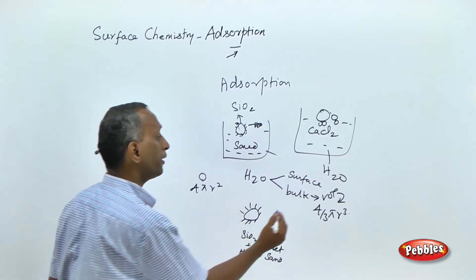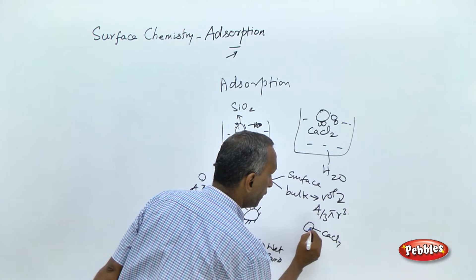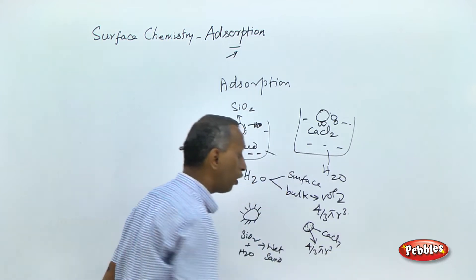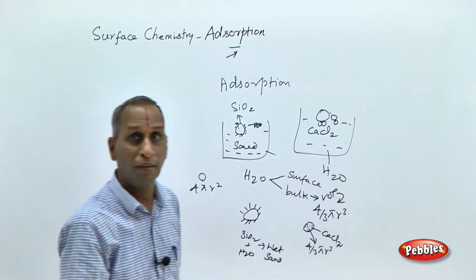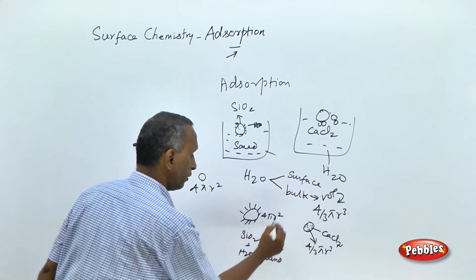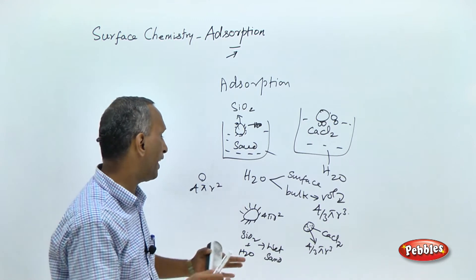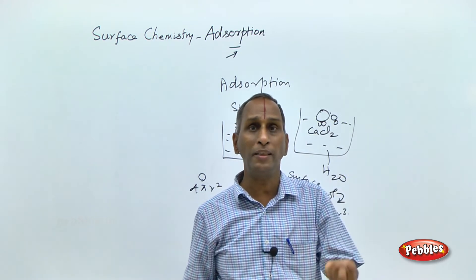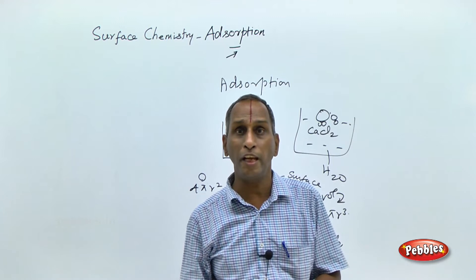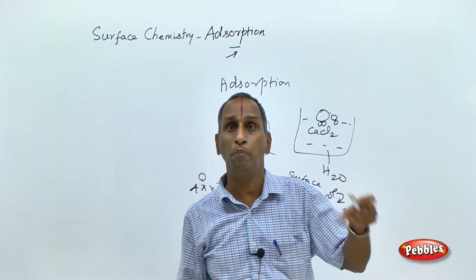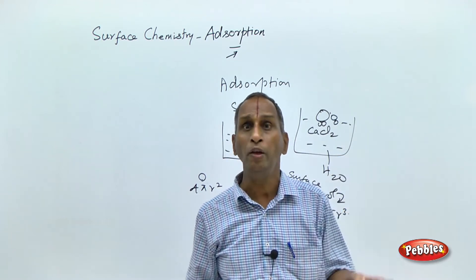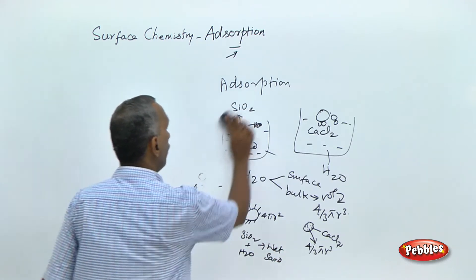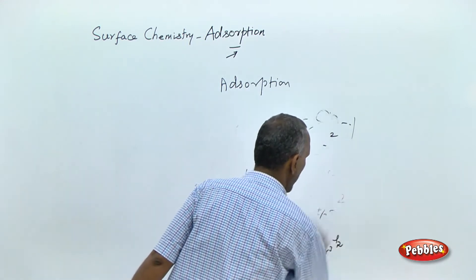On the other hand, calcium chloride particles contain water throughout the whole volume, so 4/3πr³ is fully occupied. Whereas only 4πr² is occupied by water particles in sand. So sand and calcium chloride particles take water differently — one set takes water only at the surface, the other takes water into the bulk. Bulk means volume. If only the surface is occupied by any system, that phenomenon is called adsorption.